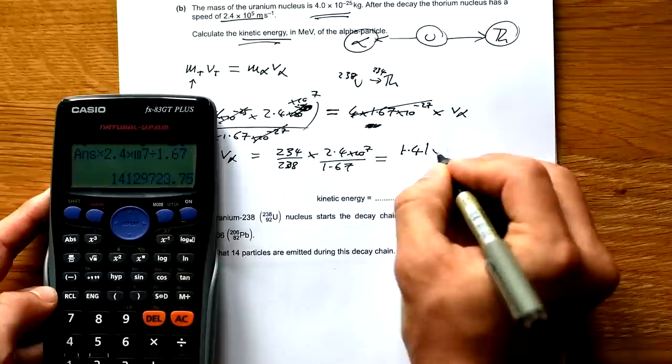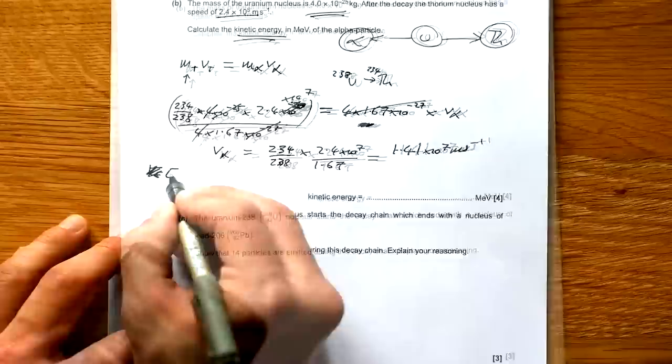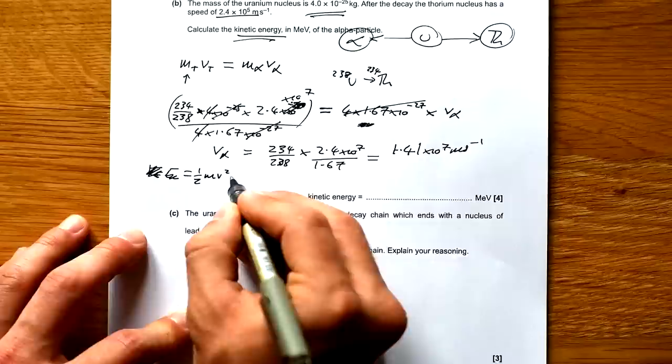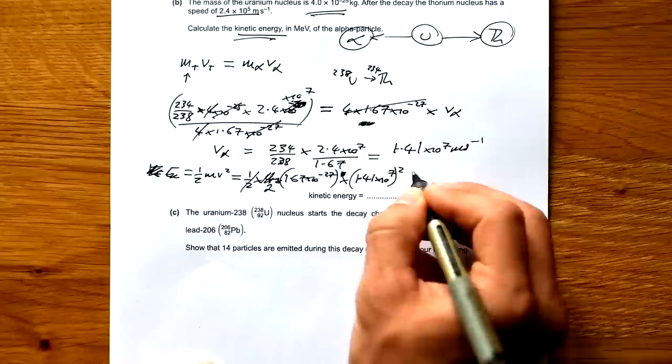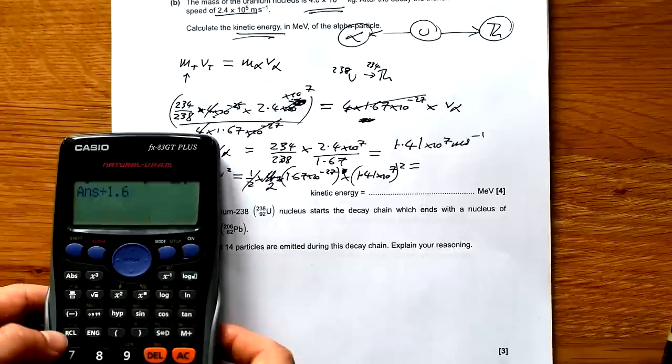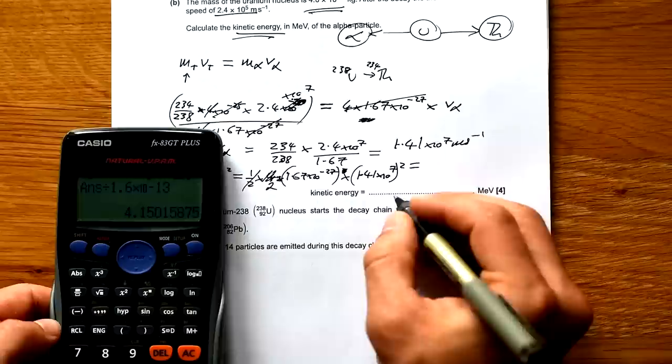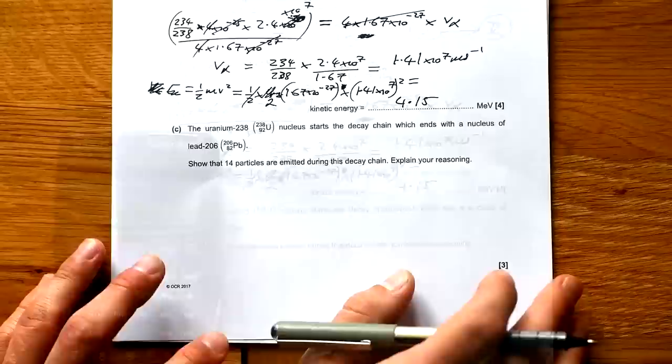Ultimately the speed of the alpha particle is 234 over 238 times 2.4 times 10 to the 7 divided by 1.67. That gives us 1.41 times 10 to the 7 meters per second. Then to find the kinetic energy we do half mv squared. It's half times 4, and I can cancel that to 2, times 1.67 times 10 to the minus 27 times 1.41 times 10 to the 7 squared. That gives me this number, but I'm looking for mega electron volts. So I have to divide by 1.6 times 10 to the not minus 19 because that's electron volts, minus 13 for mega electron volts. That gives me 4.15 mega electron volts.